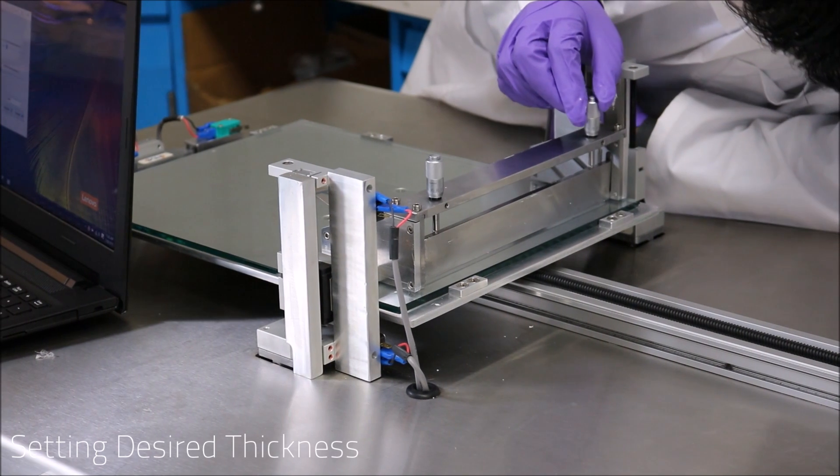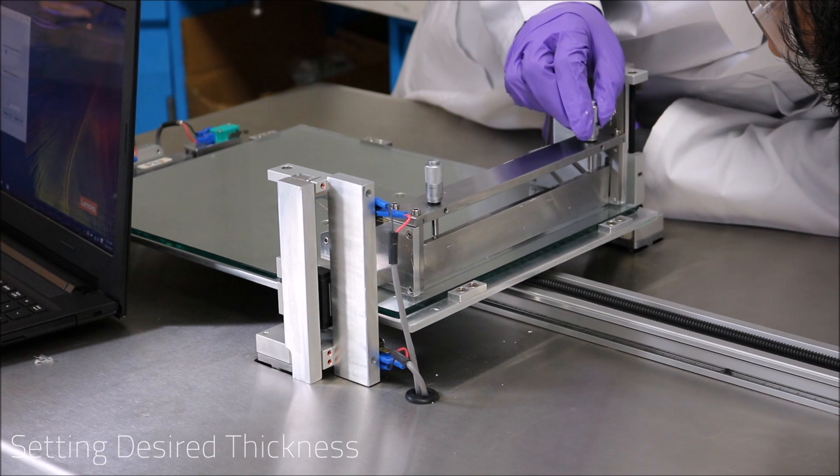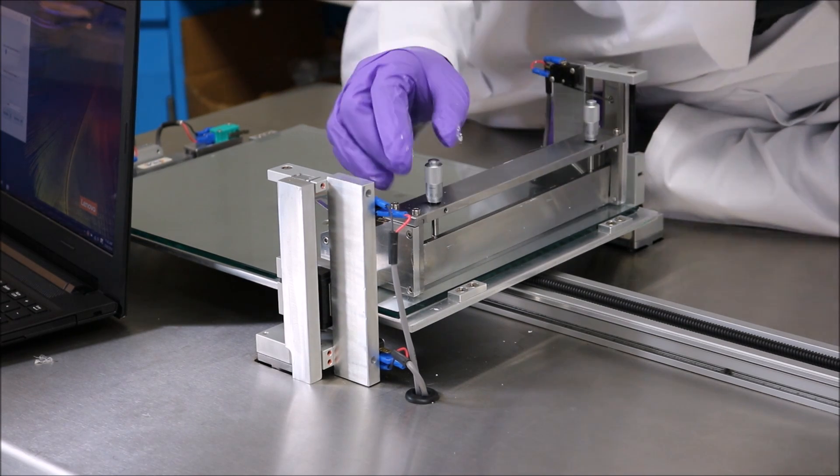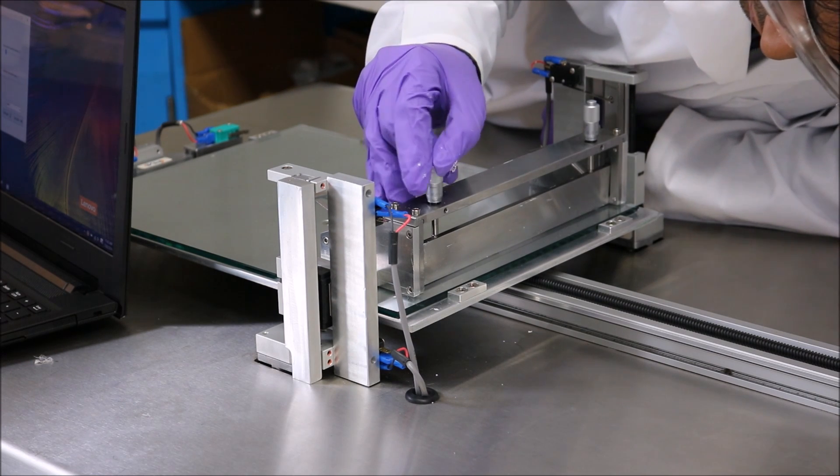The next step with the doctor's blade involves establishing your desired thickness. This can be done by simply fine tuning the micrometers on either side at the top of the doctor's blade to whatever thickness you would like.